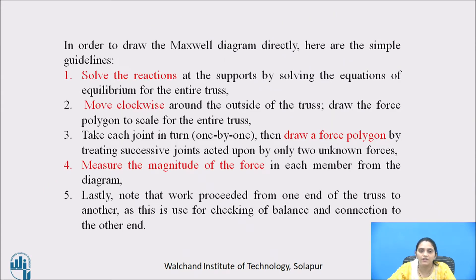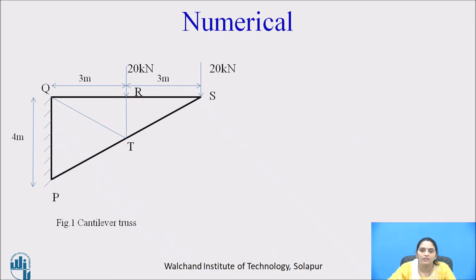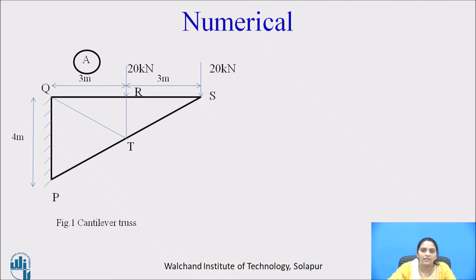These are the steps we have to follow to draw Maxwell's diagram or the force diagram. Let us consider one numerical to learn how to draw the force diagram and determine the forces in the members. In the cantilever truss shown in the figure, two external forces are acting at points R and S. As it is a cantilever truss, there is no need to determine the support reaction; we can proceed directly.